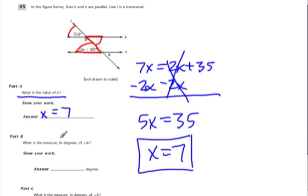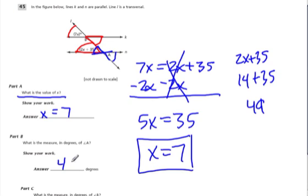So what is the measure in degrees of A? Angle A. Well, angle A is right here. And that's equal to this angle because of vertical angles. So 2X plus 35, what does that equal? Well, if X is 7, we get 14 plus 35, which is what? 49 degrees. So A is equal to 49 degrees.